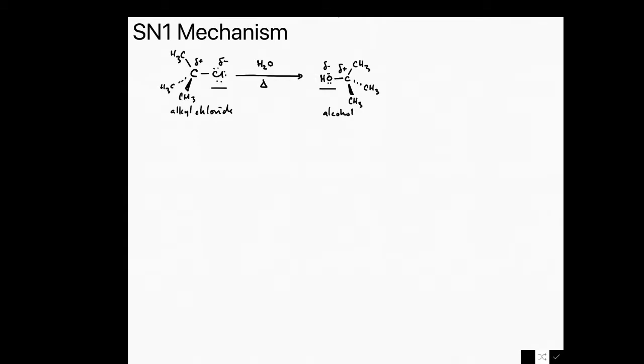So how do we know this is an SN1 mechanism? The first thing to do is classify the carbon bearing the leaving group, and it is a tertiary alkyl chloride. That's an important thing to do at the beginning so that we know it's SN1.